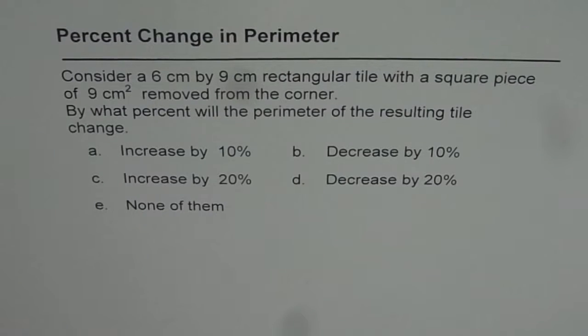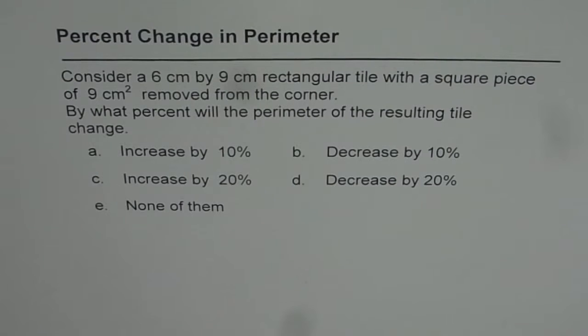Percent change in perimeter. Consider a 6 cm by 9 cm rectangular tile with a square piece of 9 cm square removed from the corner. By what percent will the perimeter of the resulting tile change? We are given 5 options.